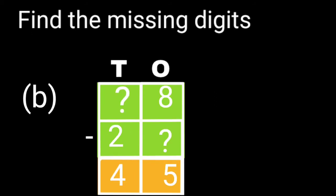In question number B we have a missing digit of smaller number at one's place. To find it we will subtract the difference from the digit at one's place of the bigger number. 8 minus 5 is 3.